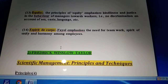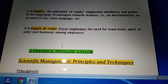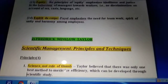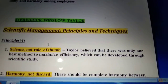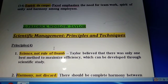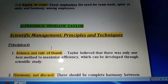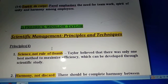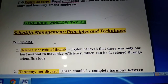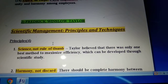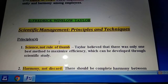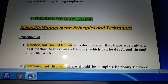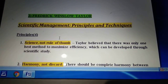Now we will go through the second theory of classical management, which was given by F.W. Taylor, also called scientific management. According to him, he gave four principles. The first principle was science, not rule of thumb. Taylor believed that there was only one best method to maximize efficiency, which can be developed through scientific study. There can be many methods for doing any work, but there is always one best method, and it is the responsibility of a manager through observation and experience to find that best method and make it mandatory for all in the organization.